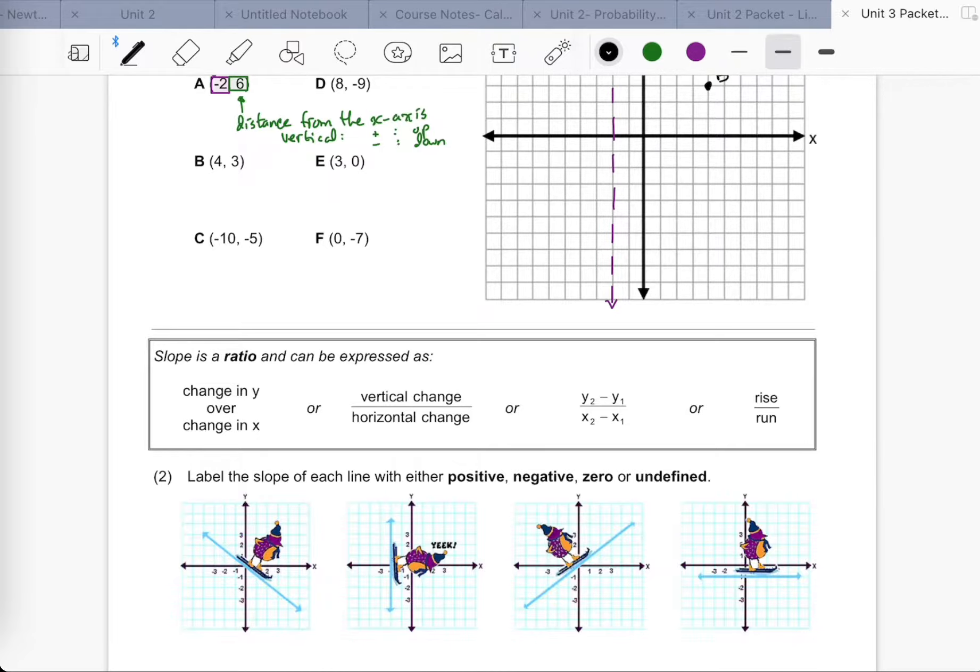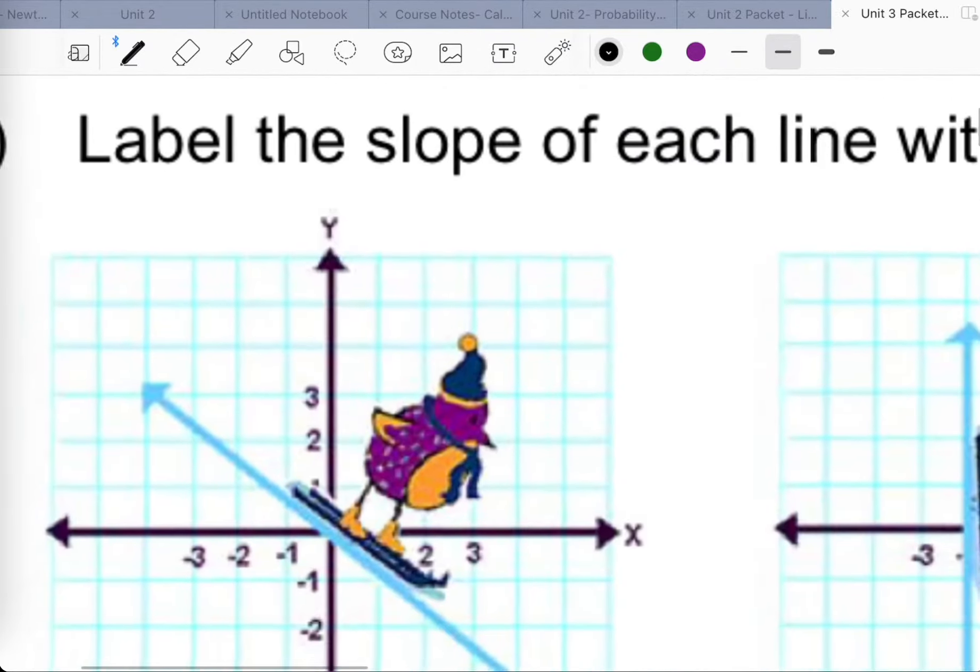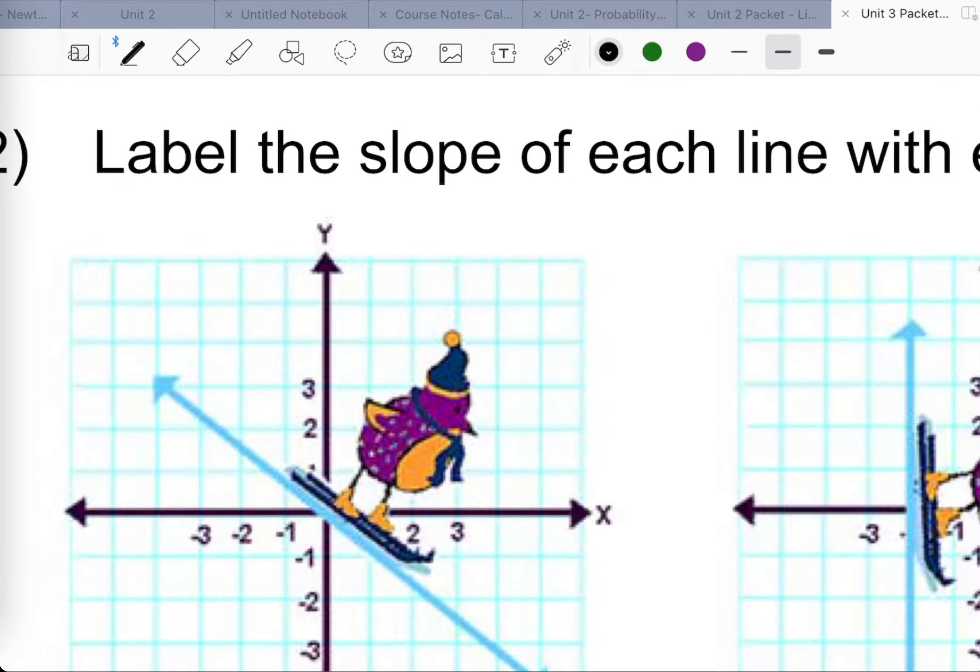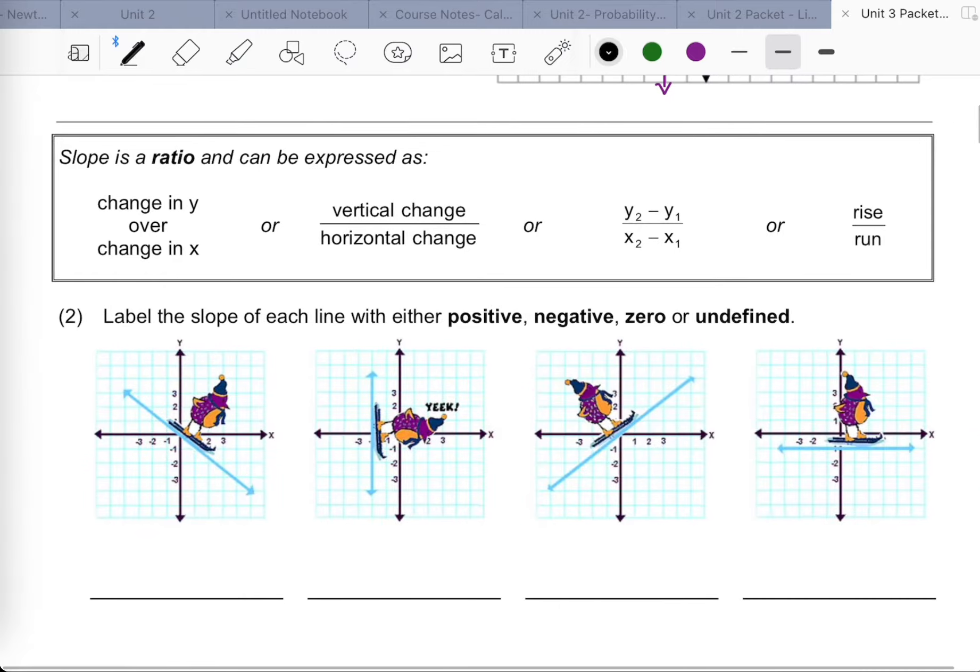I got a little character here skiing down the line indicating the direction of the slope. In some cases, it's positive slope. In other cases, it's negative slope. In another case, it's zero slope. And then you have the undefined slope, which really doesn't represent itself very well graphically.